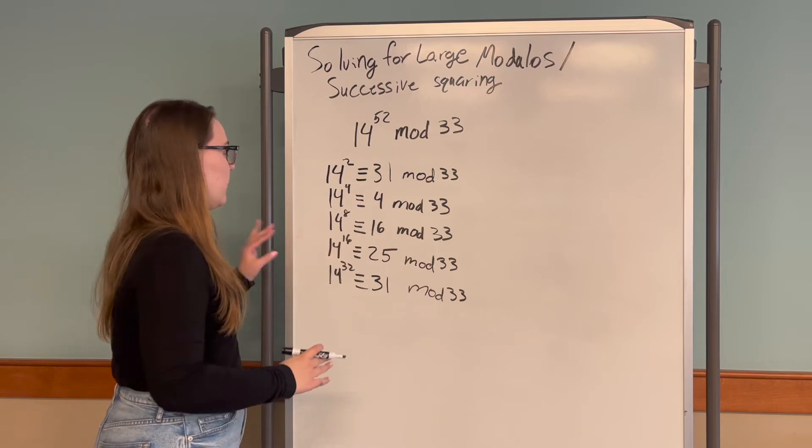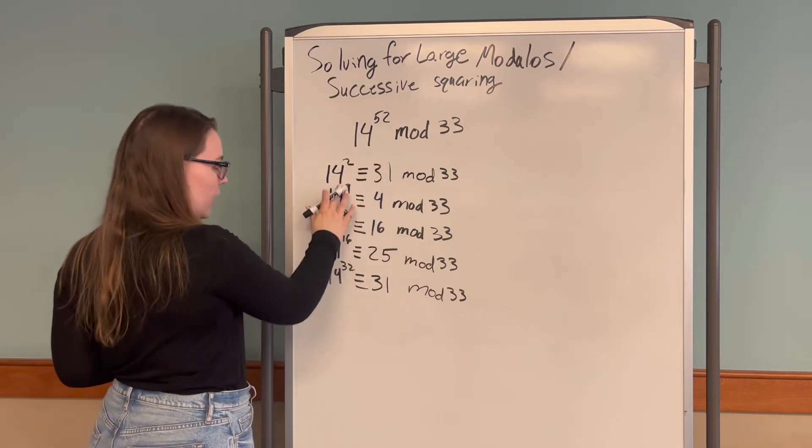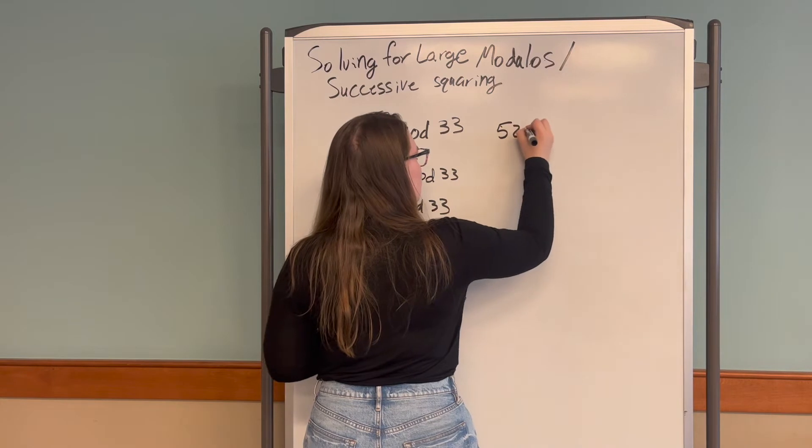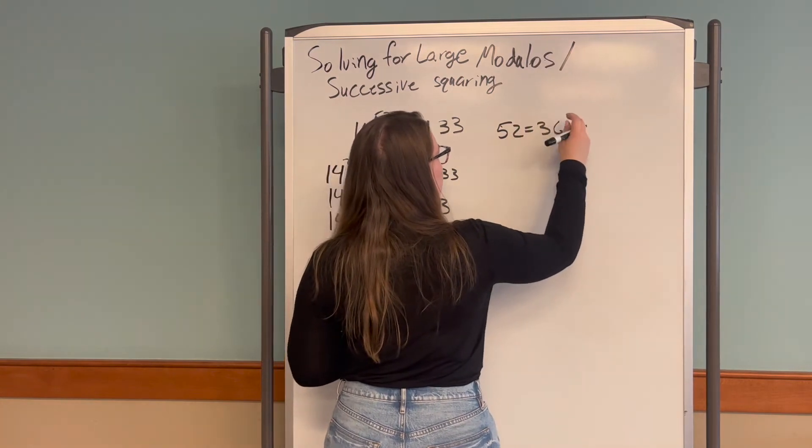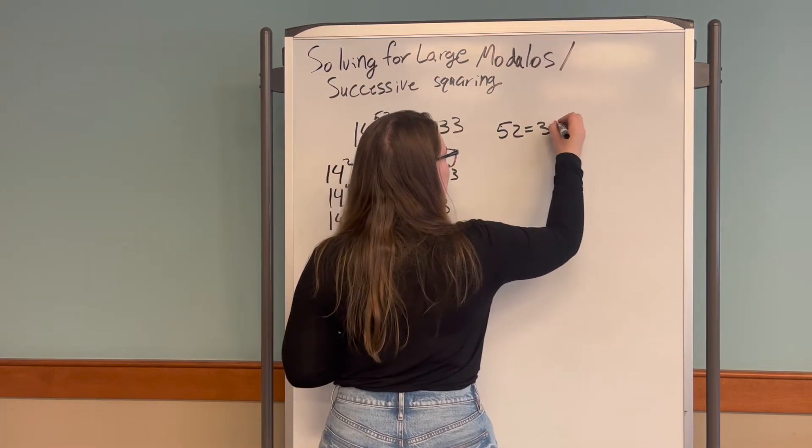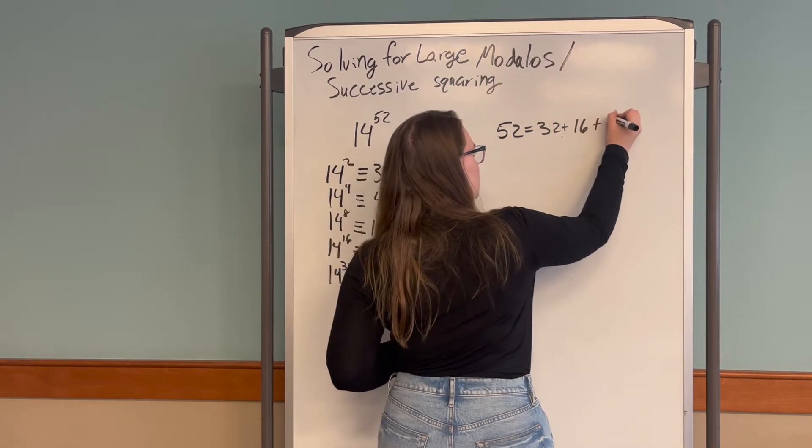The next thing we want to do is write out 52 as a sum of our exponents here. 52 equals 32 plus 16 plus 4.